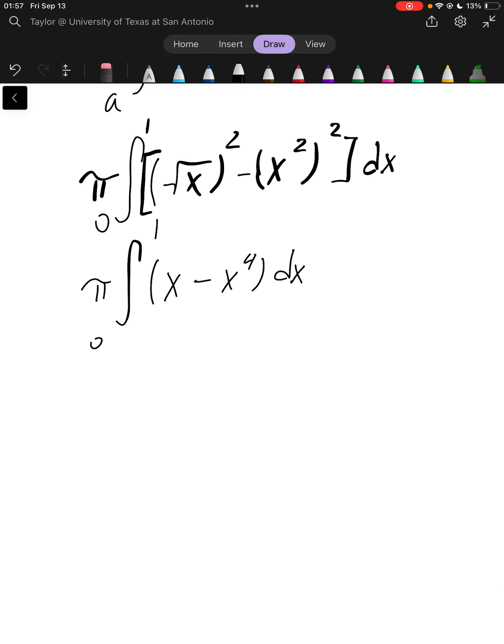Next step is to do our integration. x squared over 2, minus x to the 5th over 5, on the bounds from 0 to 1, times pi.